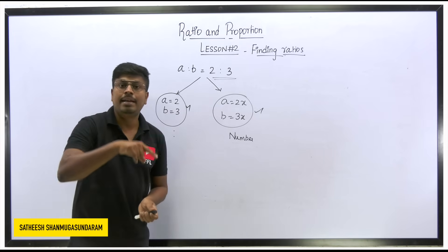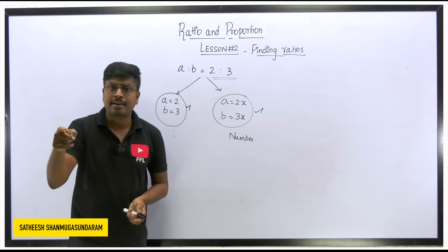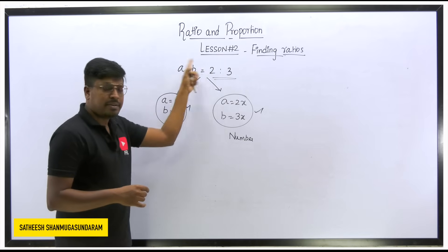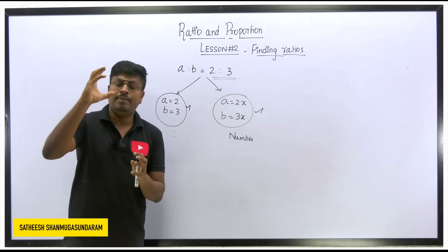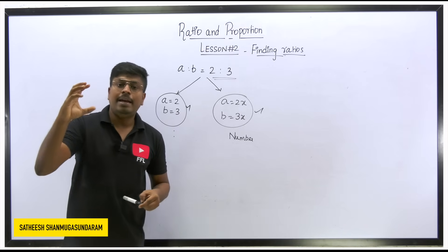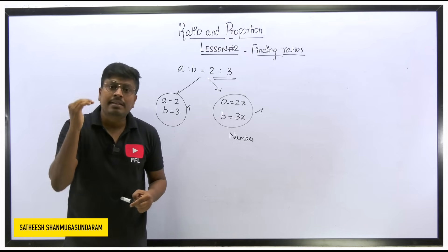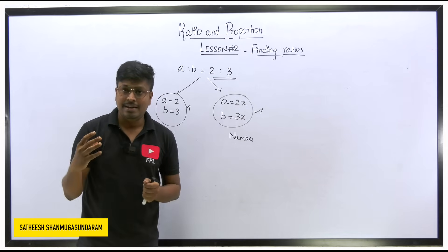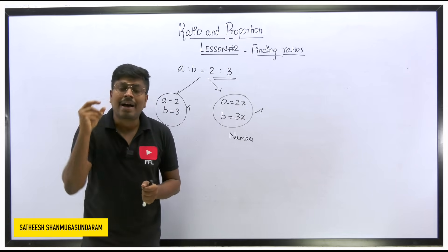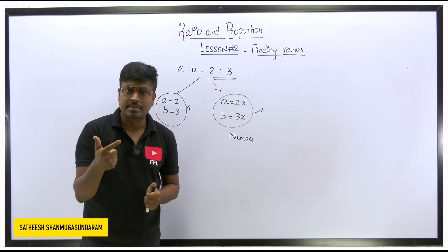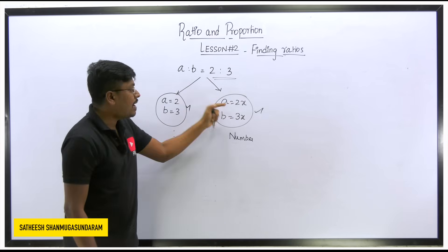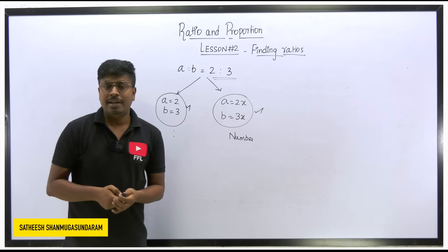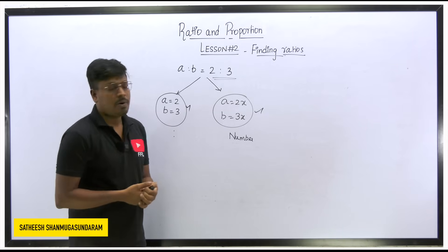Many students have this doubt — why do we sometimes take values directly and sometimes use 2x and 3x? The rule is: if both the given values and the required answer are in ratio form, substitute directly. If the answer is required as a number rather than a ratio, use 2x and 3x.